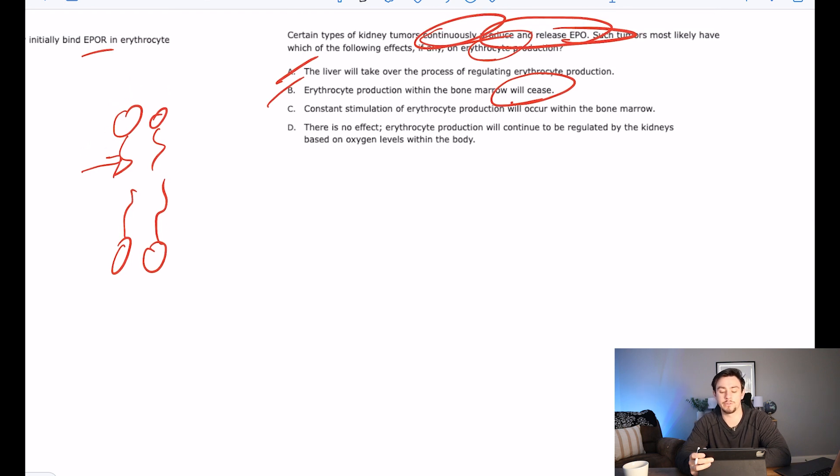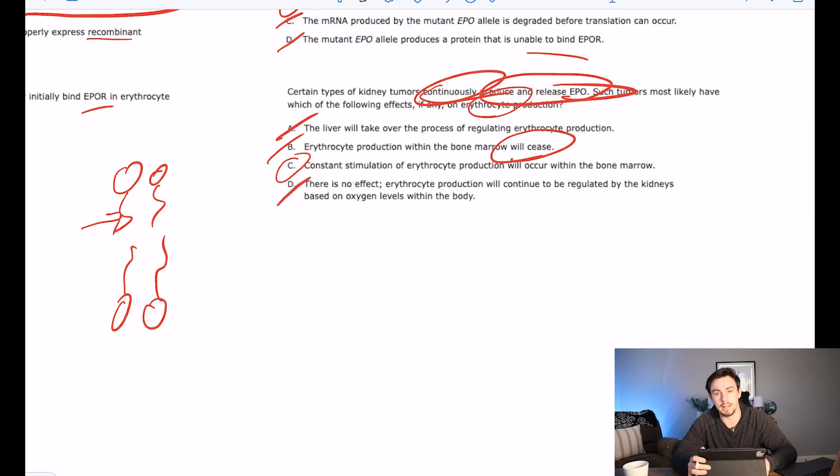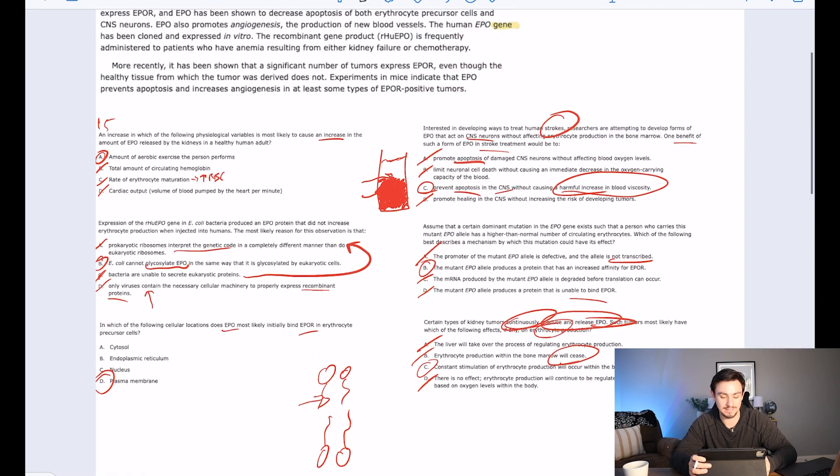C says constant stimulation of red blood cell production will occur within the bone marrow. That's true. If you have constant signals to crank it out, you're going to have constant production. D says there's no effect. Erythrocyte production will continue to be regular. Yeah, you can get cancer and nothing will happen. That's what D is saying. So the correct answer here is C.